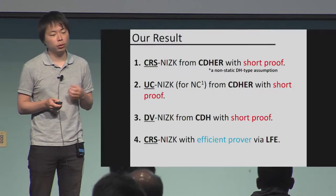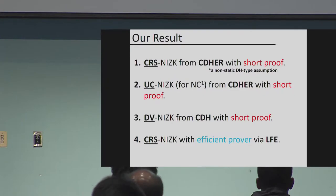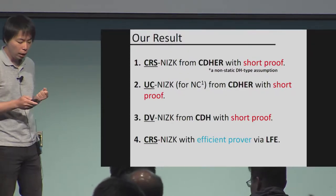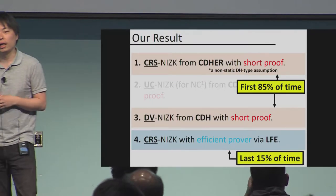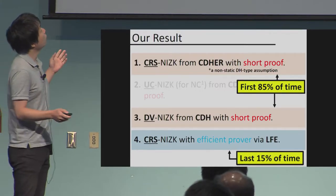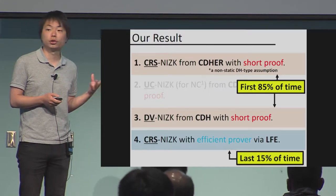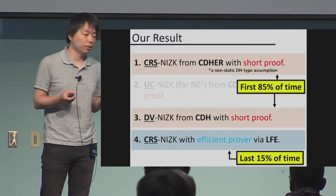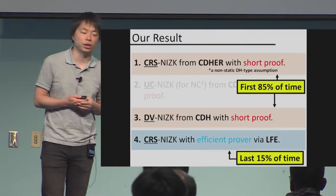The first three results are going to be about short proofs, and the last one is going to be about efficient provers. I'll use roughly 85 to 90 percent of my time to talk about the first two results regarding short proofs, and the last 15 percent I'll use to explain what an efficient prover NIZK is.